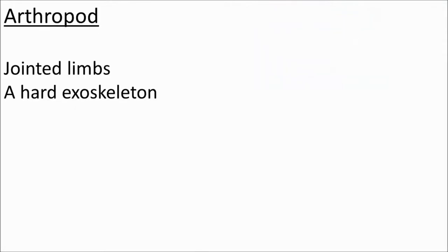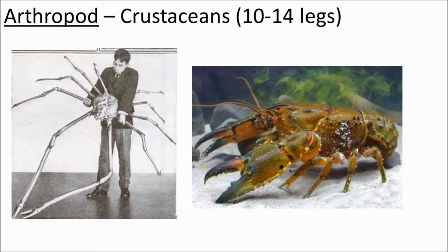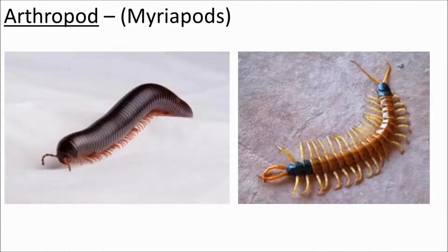We've looked at a vertebrate — the tiger — so let's look at some invertebrates. These are arthropods. They have jointed limbs and an exoskeleton, so unlike us they have their skeleton on the outside, like plate armour. Arthropods can be classified on the basis of how many legs they have. Six legs means it's an insect. Eight legs means it's an arachnid — spiders, scorpions, ticks, or mites. Usually ten legs gives us the decapods, crustaceans like lobsters, crabs, and crayfish. With more than twenty legs we have the myriapods — millipedes and centipedes. Centipedes do not have a hundred legs, and millipedes don't have a thousand — more than twenty.